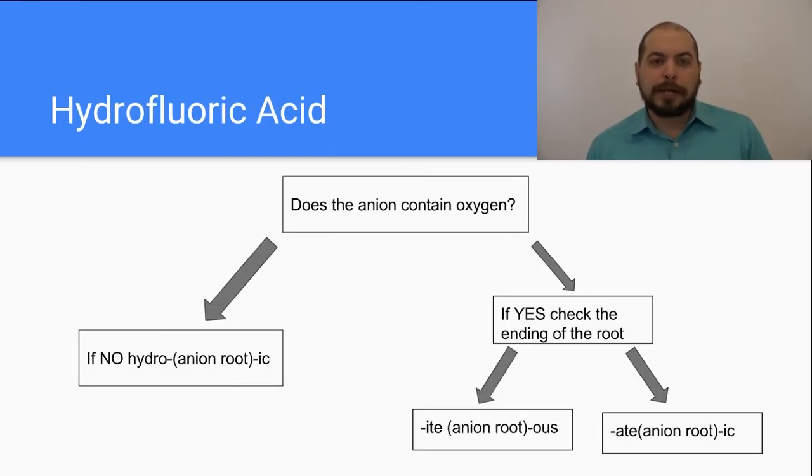For example, hydrofluoric acid. Earlier we went from formula to name, but now let's take it from name to formula. So we see hydro-ic acid and we know that there is an anion without oxygen. Because the root is fluor, we know that we are dealing with fluorine. Therefore, what we are dealing with is HF. So we can go and use the flowchart in the opposite direction as well.